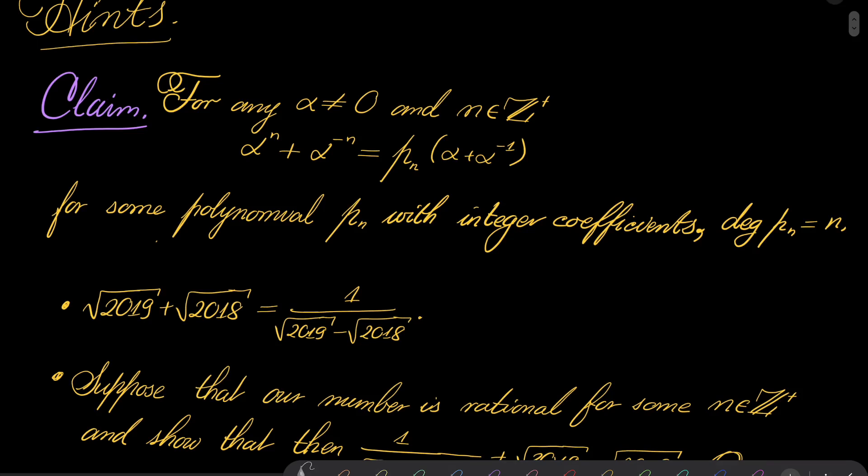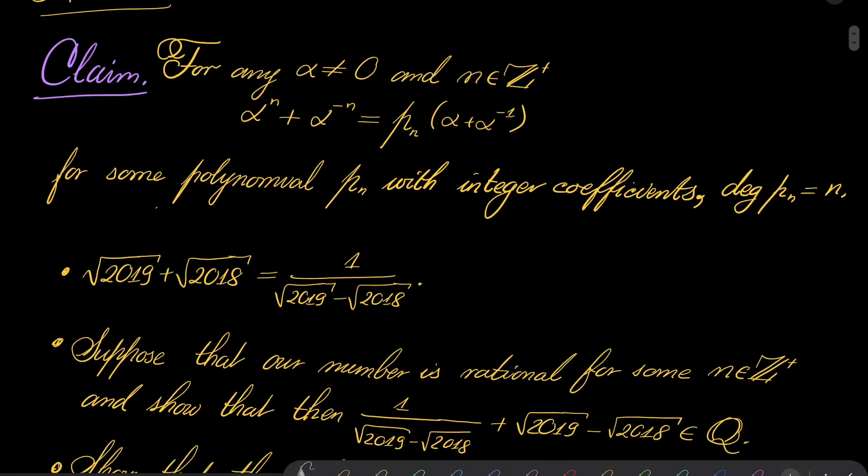It all hinges on the following claim: if we have some non-zero number α, then α^n + α^(-n) can be written as P_n evaluated at (α + α^(-1)) for some polynomial P_n with integer coefficients of degree n.